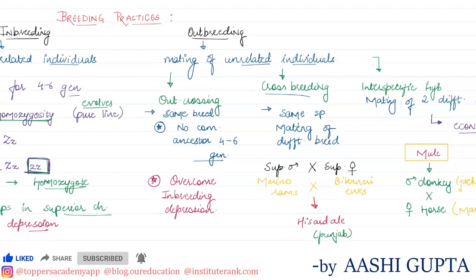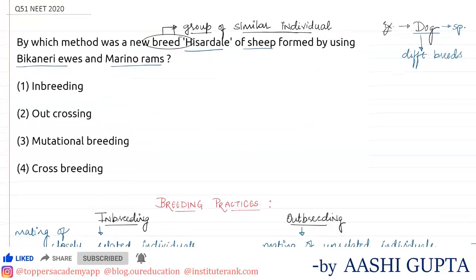Now let us solve the question. We are asked by which method a new breed called Hazardale was formed from Merino rams and Bikaneri ewes. We can see that Merino rams were superior males and Bikaneri ewes were superior females. So the correct answer to this question is crossbreeding.